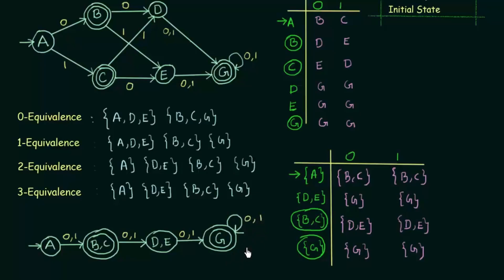We have completed the state transition diagram for the new minimized DFA. In the original DFA we had 6 states, and counting the unreachable state it would have been 7 states. But in the minimized DFA we have only 4 states. We have successfully minimized the given DFA even when there was an unreachable state, by removing it and proceeding as we normally would. I hope this was clear. Thank you for watching, and see you in the next one.